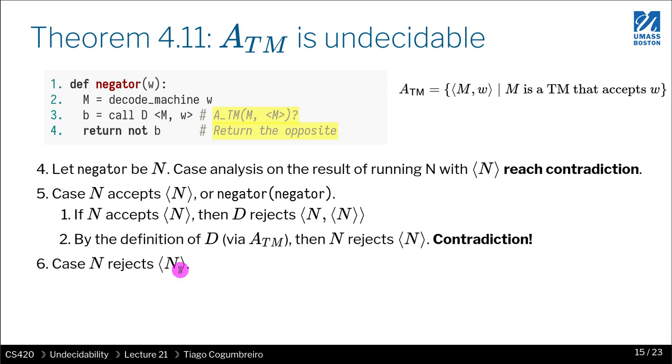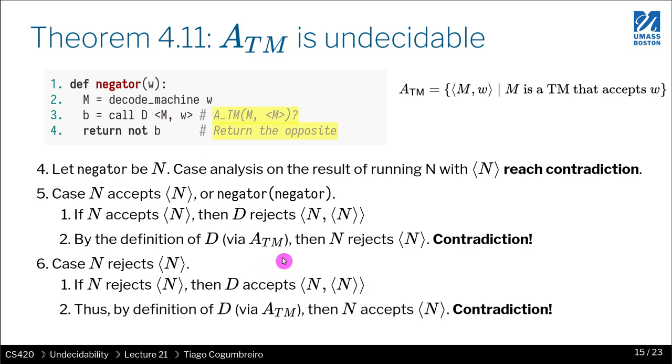So the next case is N rejects the input. So if this rejects, then this whole thing returns false, which means b returns true. So if b returns true, that means that N accepts. So we can conclude that N also accepts N, but we assume that it rejected N. So we reach again the contradiction.